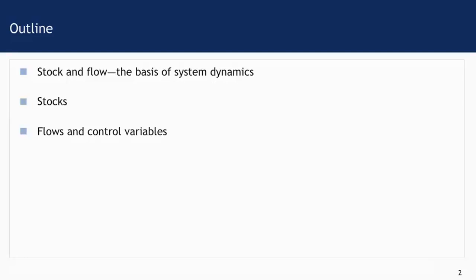The outline of this lecture comes in three sections. First, we're going to talk about why stock and flow are the basis of system dynamics modeling, and then we'll have a section on stocks and then a section on the flow and control variables.